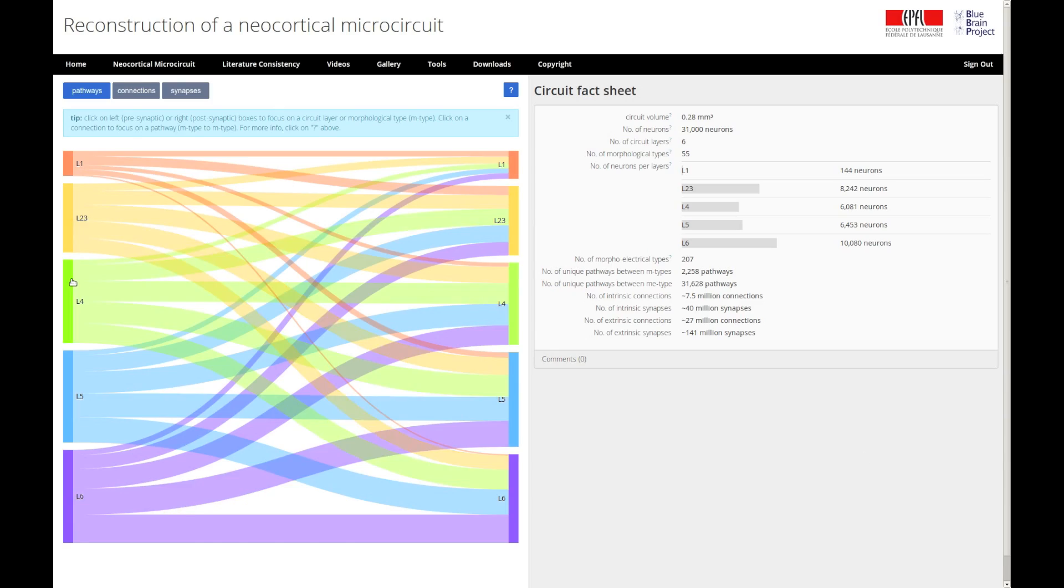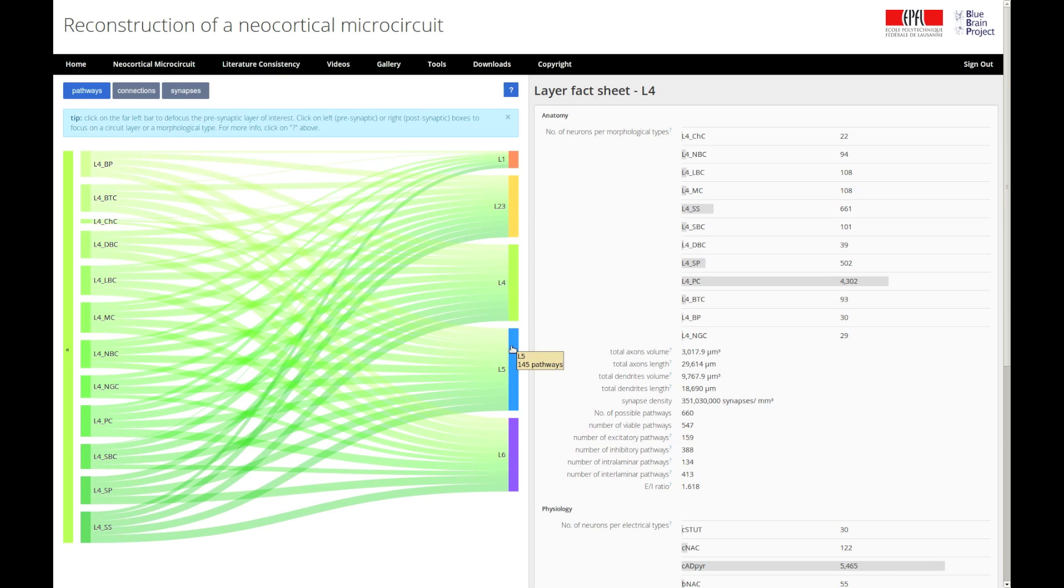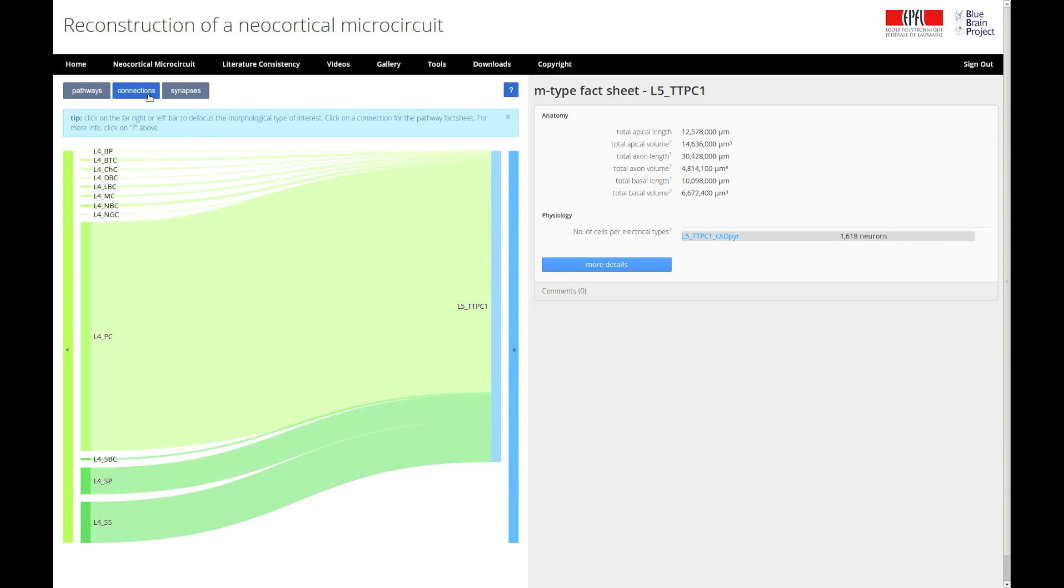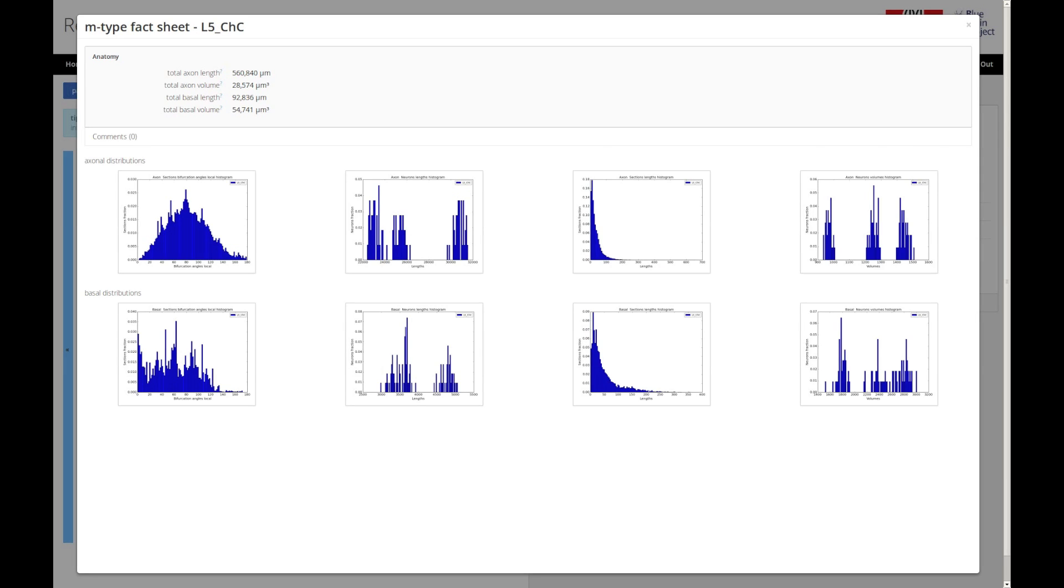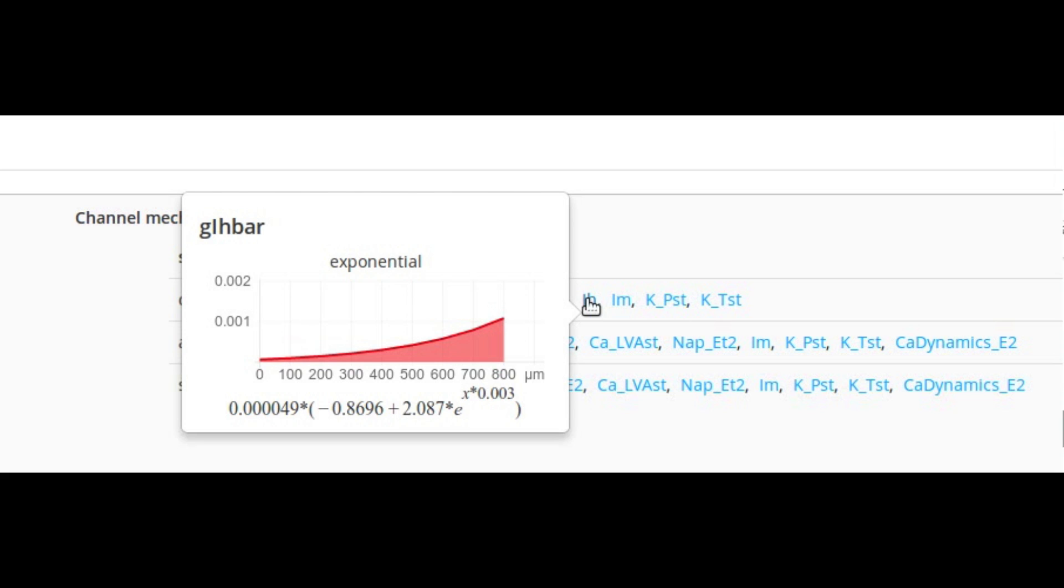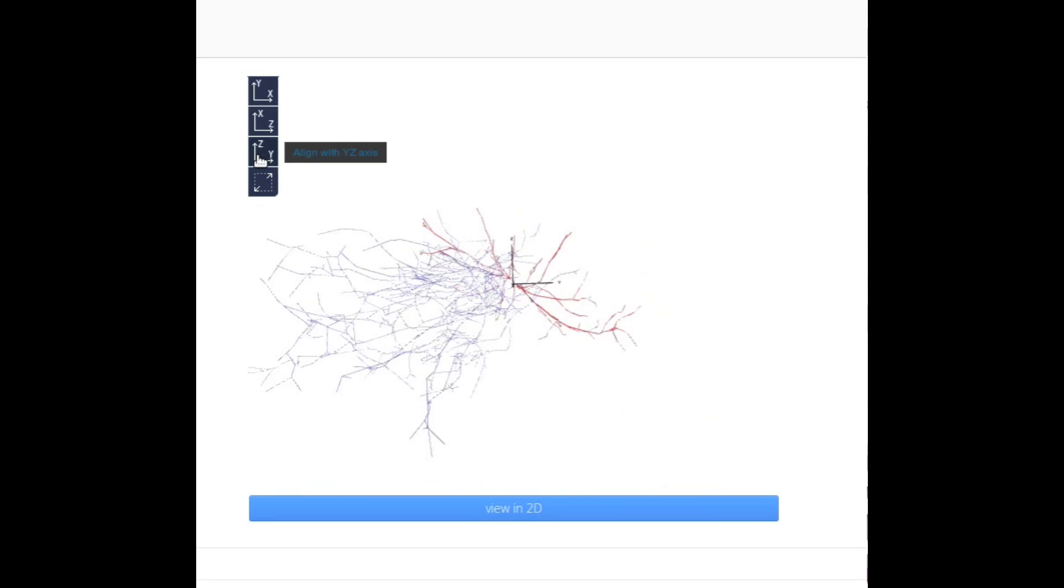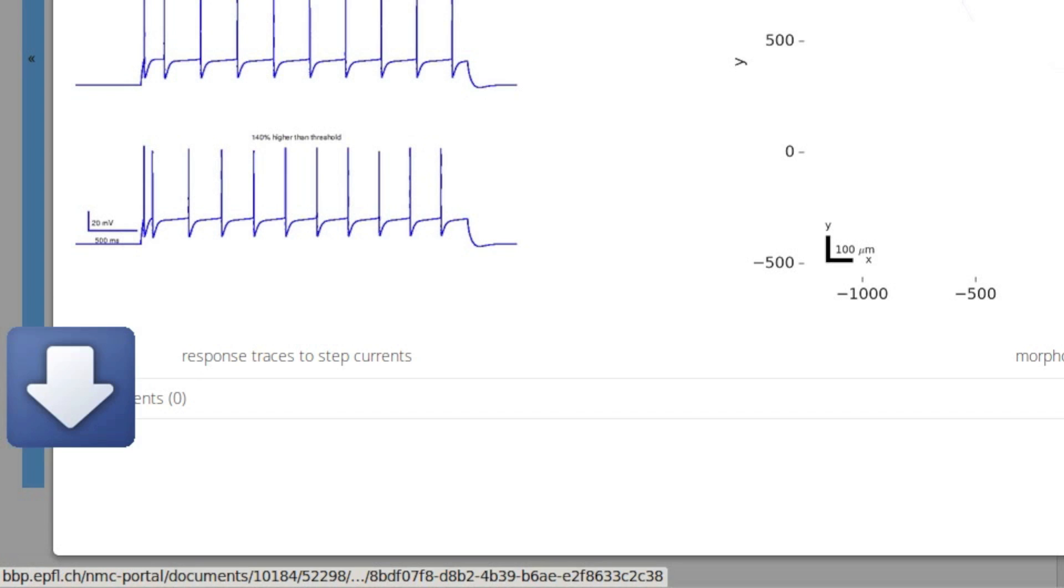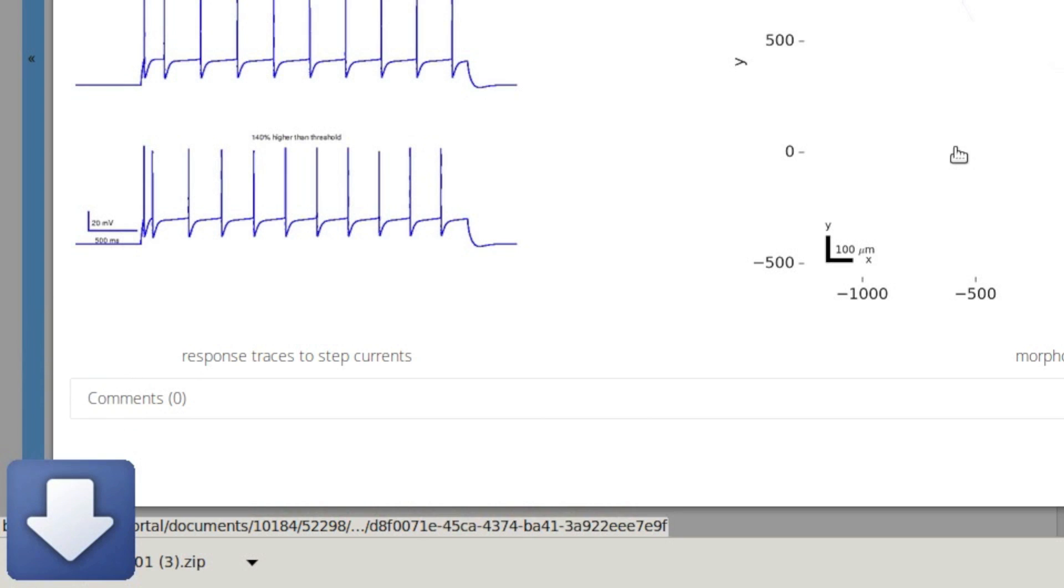The reconstruction can be accessed through an online portal called the neocortical microcircuit collaboration portal. This portal makes it possible to access the data that went into building the reconstruction, as well as the models that came out of the reconstruction. These models are across several different levels: ion channels, single neuron models, detailed predictions of over 2,000 synaptic connection types, as well as all the papers that were used to validate the properties of the reconstruction.